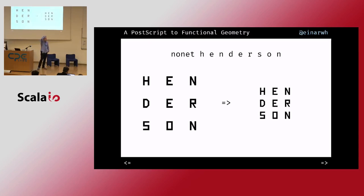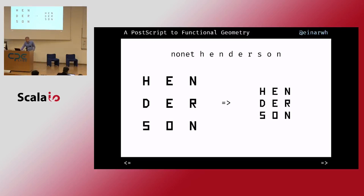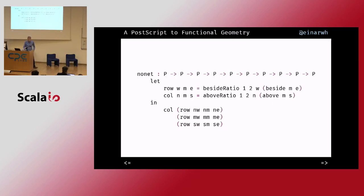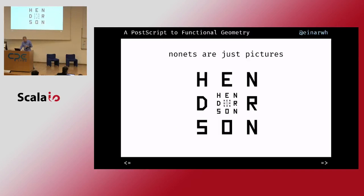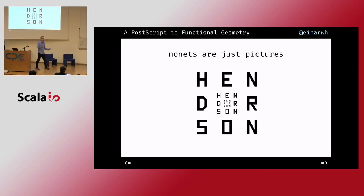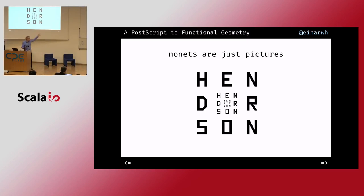Similar to quartet is a nonet, which takes nine pictures and creates a three-by-three grid. I have letters H, EN and so forth and I create a nonet out of them. It's very simple — I create a row and a column and combine everything. An important lesson in this paper is that every time I've composed some pictures, I just have a picture and I can do whatever I like with it.